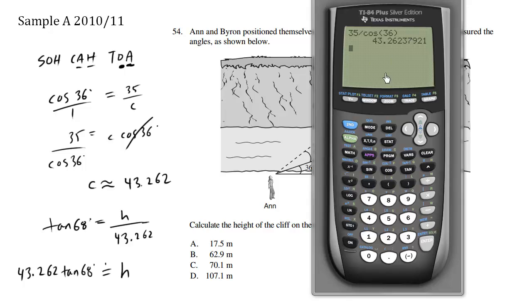So it's going to be this number, 43.262, times tan of 68 equals 107. So H is approximately equals to 107.08 meters.